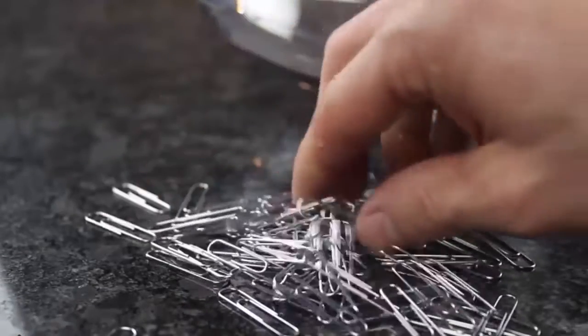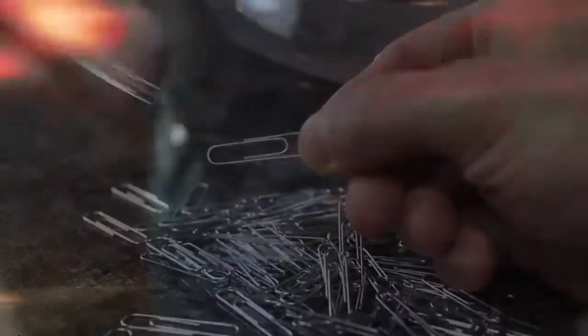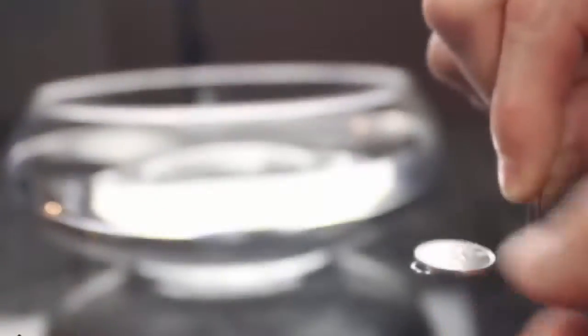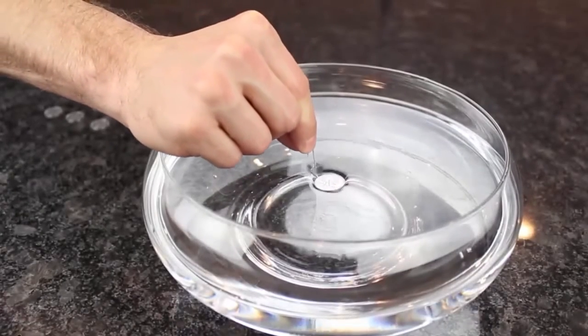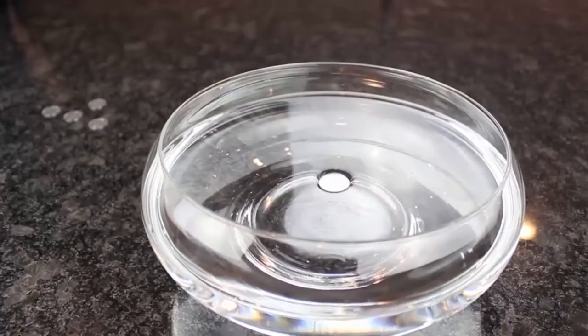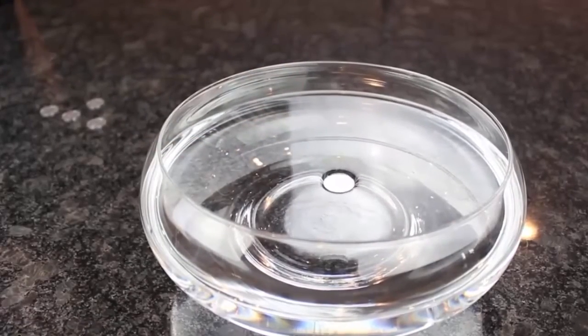But to change all that, you just need one small paper clip. Simply unfold the clip by bending the inner part back until it makes an L shape, then balance one of the coins on the larger end and use the other side as a handle to slowly dip the coin into the water. Now pull the clip back out of the water and amazingly, the coin will be left floating on top almost like magic.